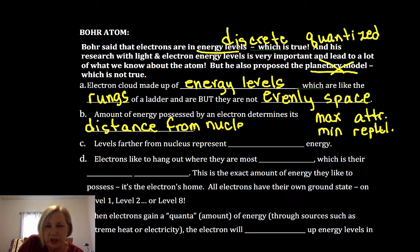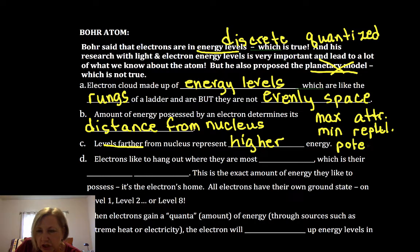These energy levels or energy shells are also going to help us understand the energy of the electron. So levels that are further from the nucleus are higher in potential energy. So we're talking here about potential energy.